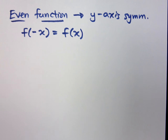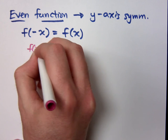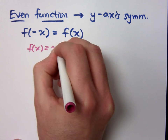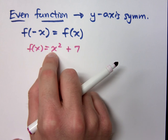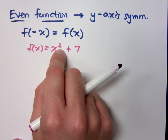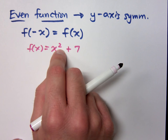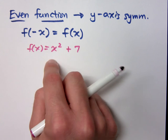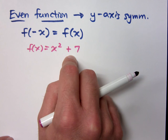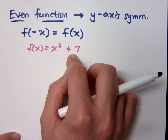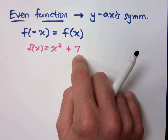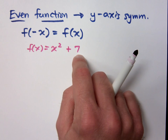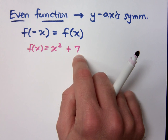An easy way to think about this is think about functions that have an even degree. A great example would be x squared plus 7. If I replace x with negative x, when I square it, it becomes positive — it still stays positive x squared. So this is even. If all your terms have an even degree — 7 has a degree of 0, which is still even — it's an even function with y-axis symmetry.